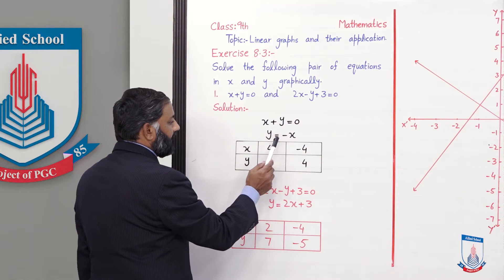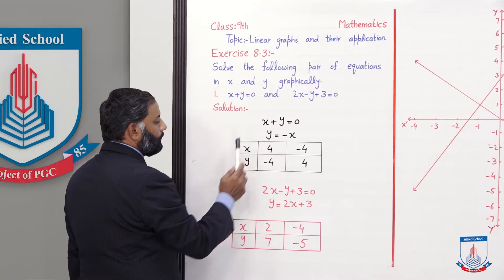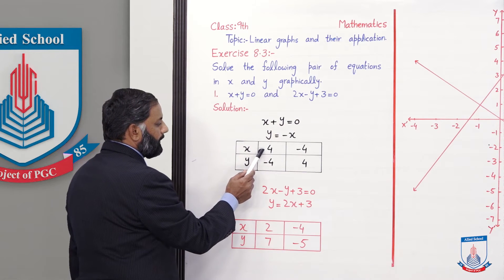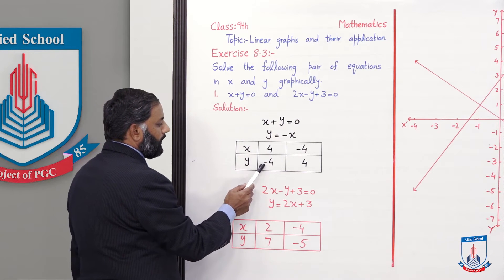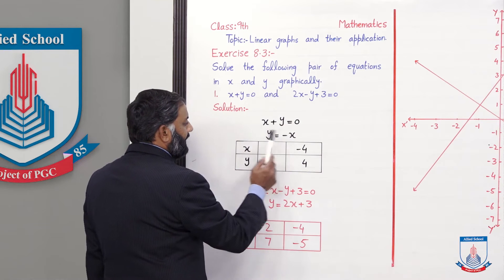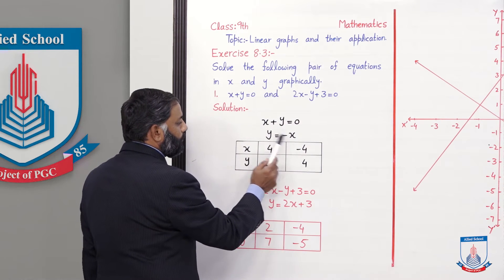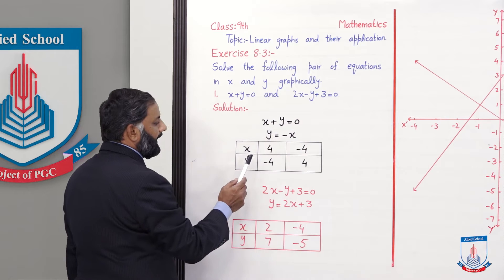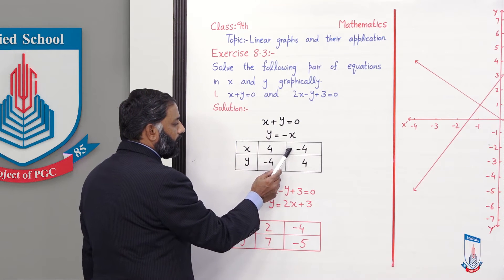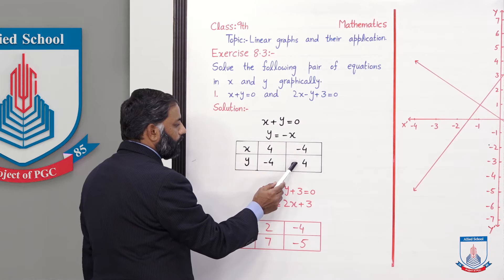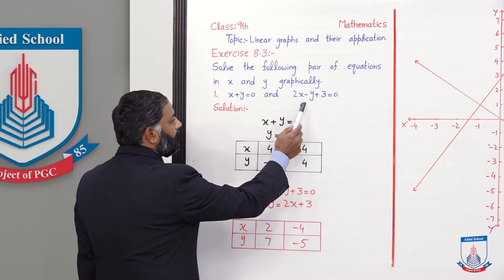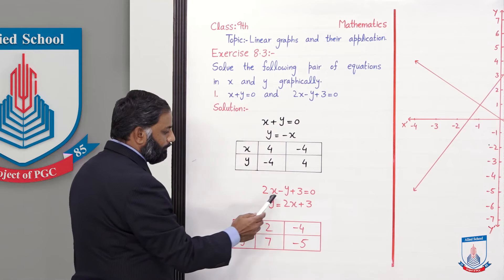अब x की दो values put करके हमने दो ordered pairs बना लिए। पहले x की जगह 4 put करें तो y की value -4 आएगी, तो first ordered pair बनेगा (4, -4)। Then x की जगह -4 put करें तो y की value +4 हो जाएगी, तो second ordered pair आया (-4, +4)।